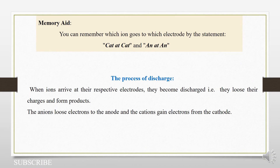A memory aid — sometimes it is challenging to know which ion goes to which electrode, because we have cathode, we have anode, we have anion, we have cation. So here we have a memory aid that can help us remember which ion goes to which electrode.